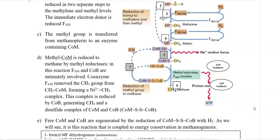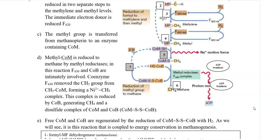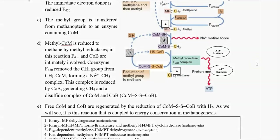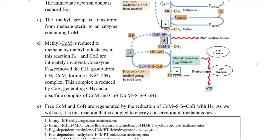In the first step, coenzyme F430 removes the methyl group from methyl group attached coenzyme-M, forming a nickel-methyl complex. You may already be aware that coenzyme-F430 contains nickel as a cofactor. This complex is further reduced by coenzyme-B, generating finally the methane and a disulfide complex. That is, a complex comprising coenzyme-M as well as coenzyme-B that are united by a disulfide linkage.